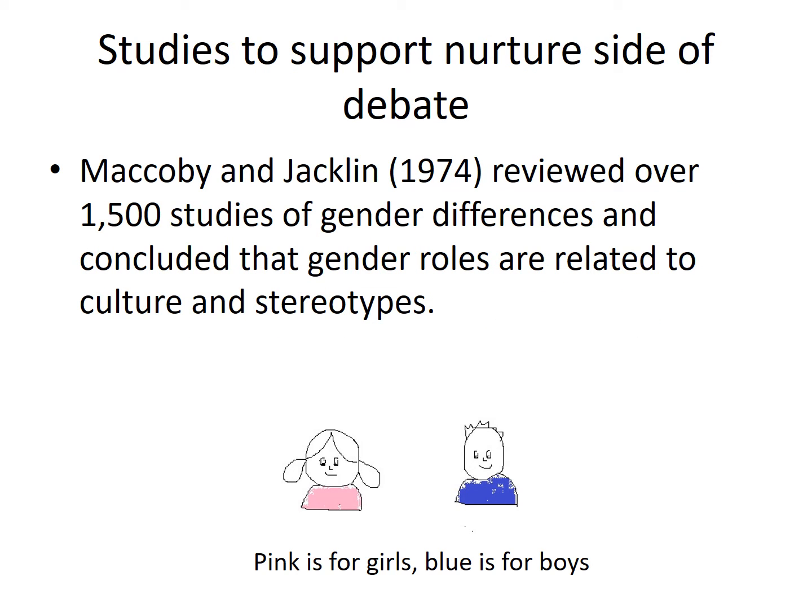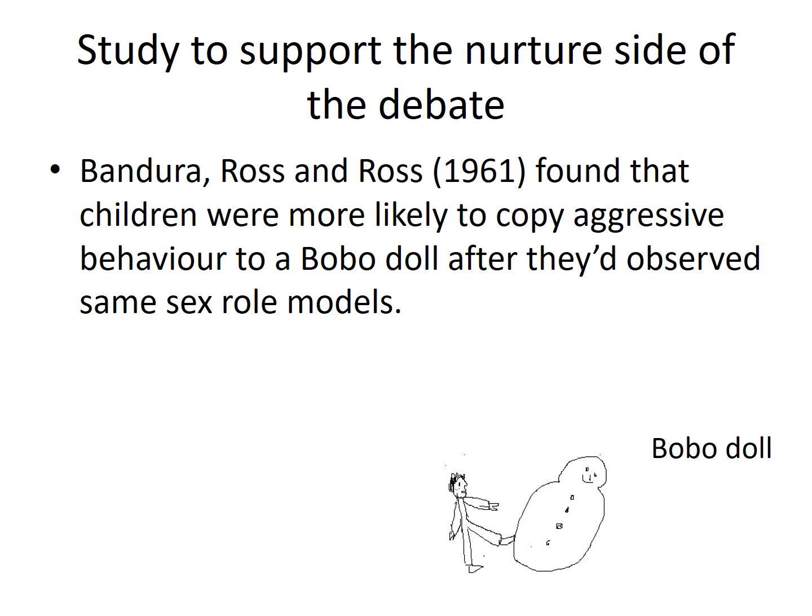In contrast, there are studies to support the nurture side of the debate — the idea that experiences, gender differences and our environments affect our behaviour. Maccoby and Jacklin reviewed over 1,500 studies of gender differences and concluded that gender roles are related to culture and stereotypes — for example, pink is for girls and blue is for boys. Bandura, Ross and Ross's study also supports the nurture side, finding that children were more likely to copy aggressive behaviour towards a Bobo doll after observing same-sex role models. This supports the idea that our environment and experiences affect our gender behaviour.